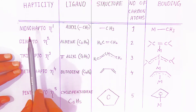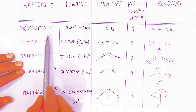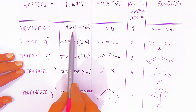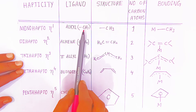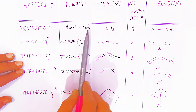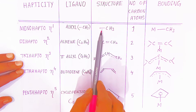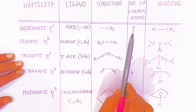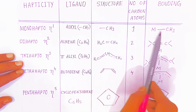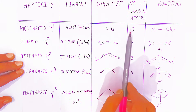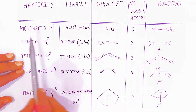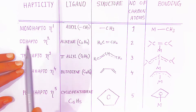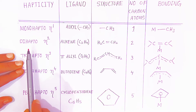First, we have mono hapto ligands. The example is an alkyl group, with structure CH₃. The number of carbon atoms bonded to the metal is only one, which is why it is called a mono hapto ligand, shown with the symbol eta raised to one.